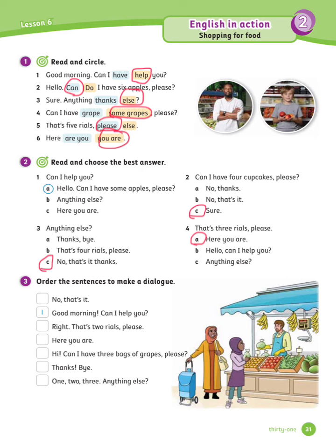Exercise number 3: Order the sentences to make a dialogue. Let's see the answers. Number 1 is done for you: Good morning, can I help you? Number 2: Hi, can I have 3 bags of grapes, please?